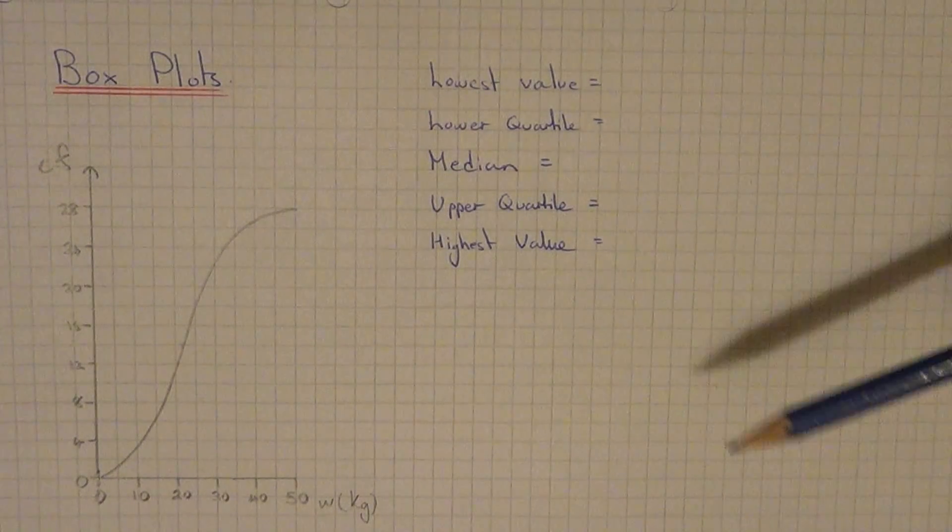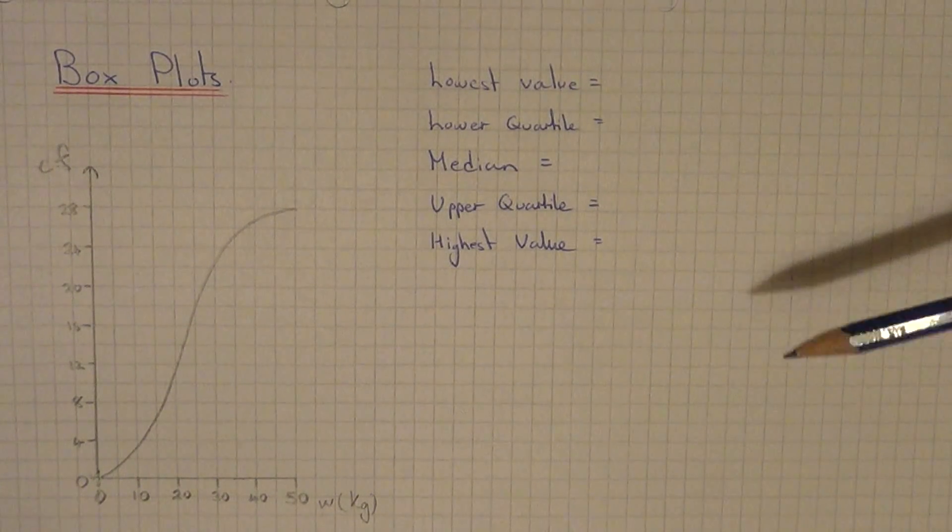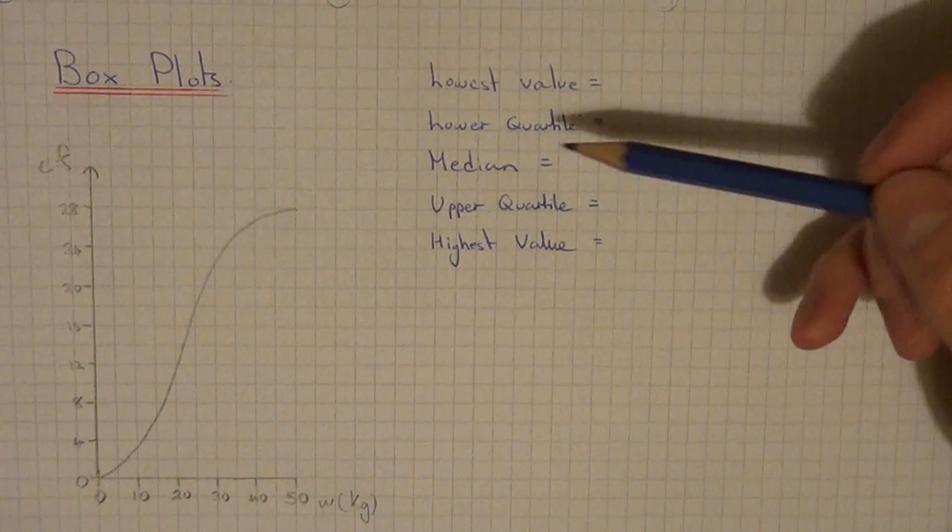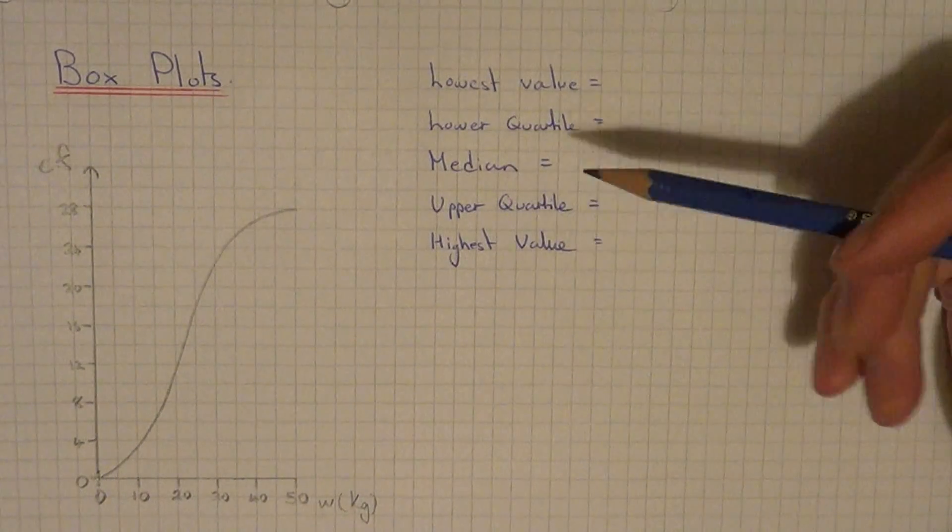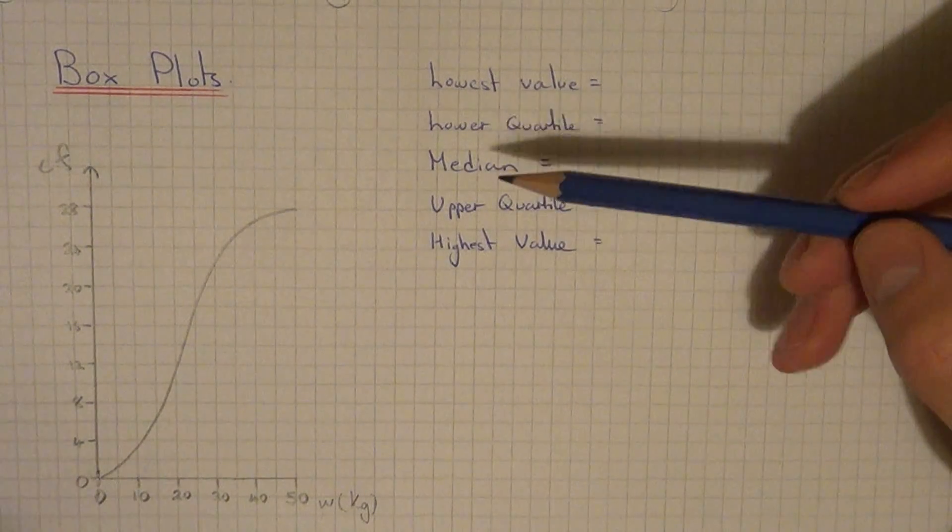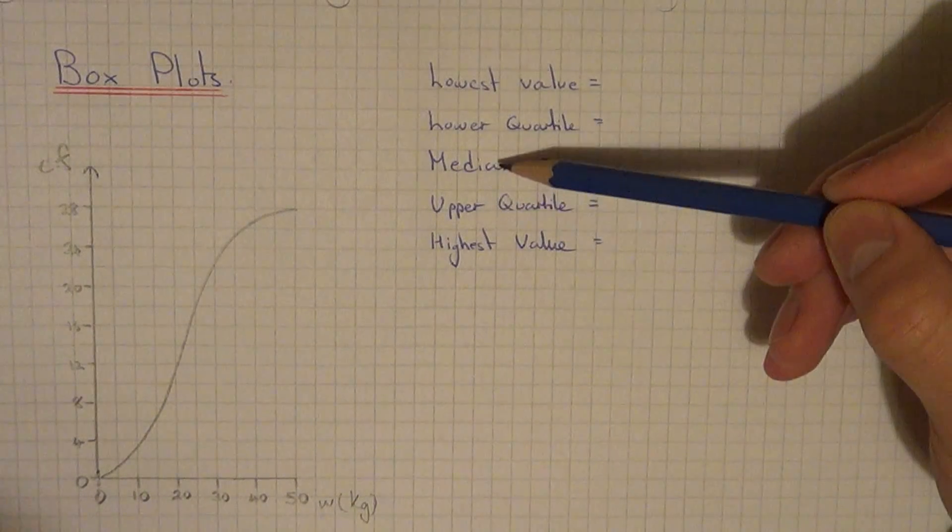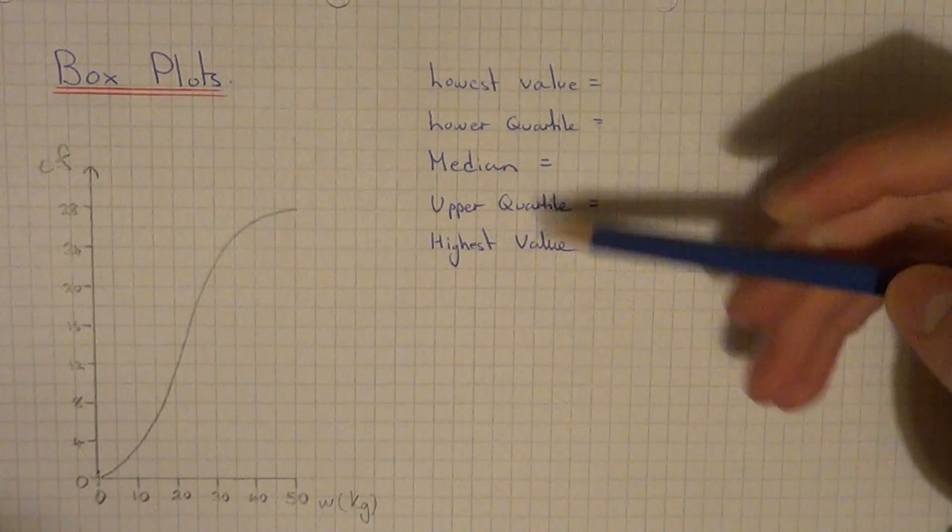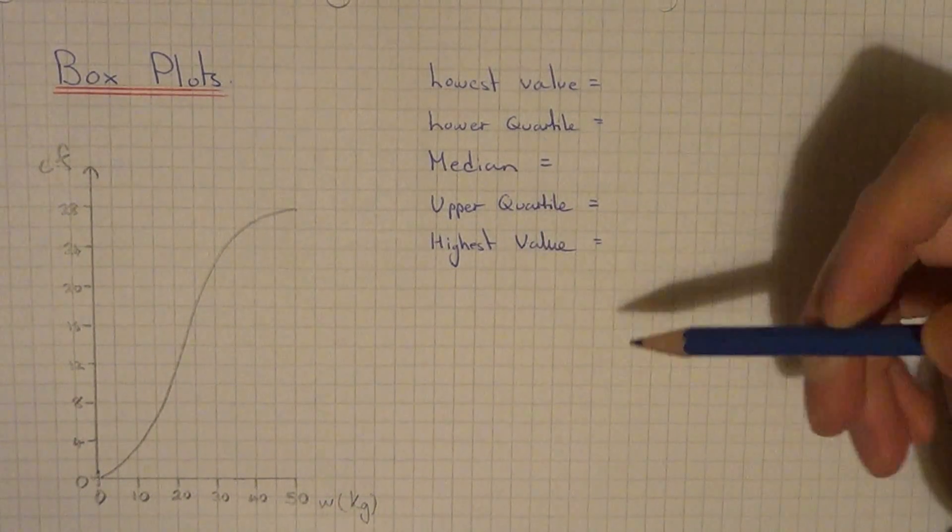Hi, today I'm going to show you how to draw a box plot from a cumulative frequency curve. In order to do this you need to work out five values from your cumulative frequency curve. You need the lowest value, the lower quartile, the median, the upper quartile, and you need to find the highest value.